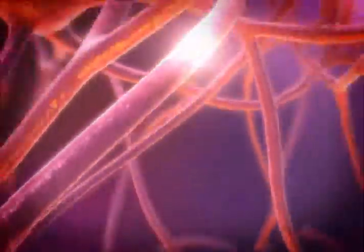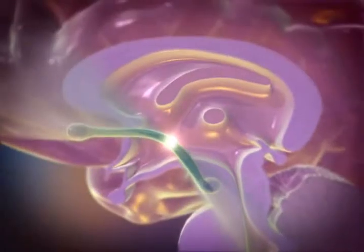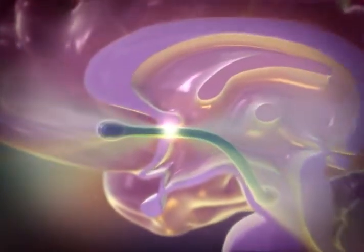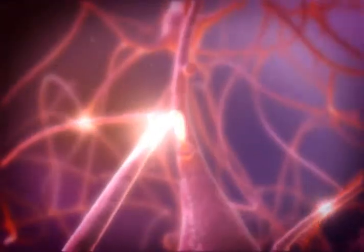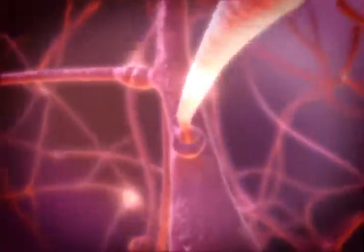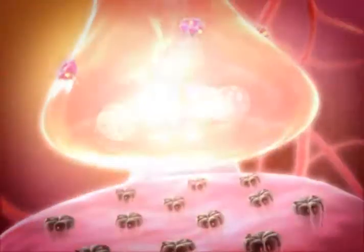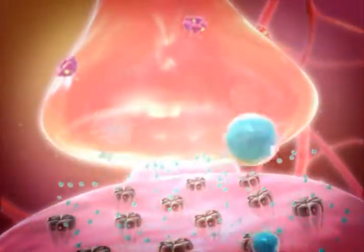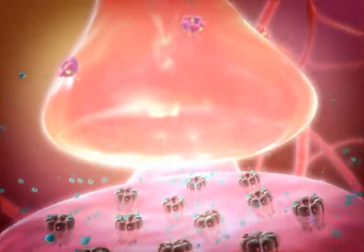The action potential travels from the VTA to the terminal end of the axon, located in the nucleus accumbens. As the neuron is depolarized, the neurotransmitter dopamine from the vesicle within the presynaptic bulb of the terminal axon floods the synaptic cleft. This is believed to initiate the reward response that is associated with smoking.